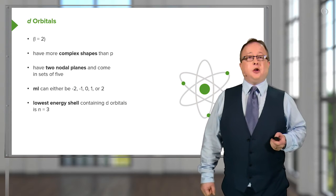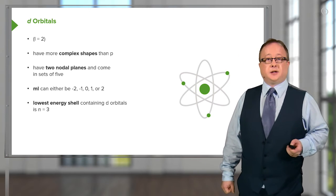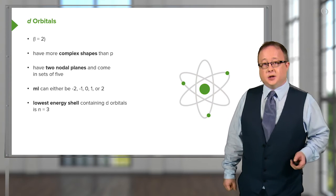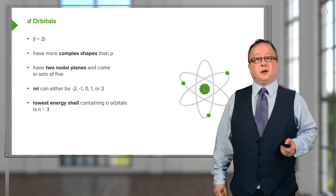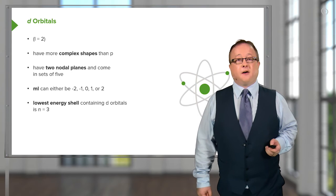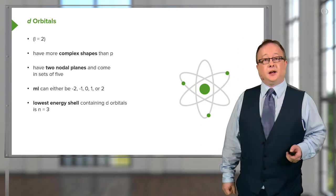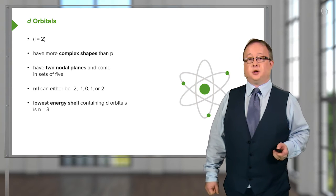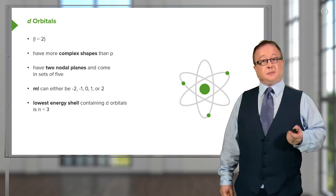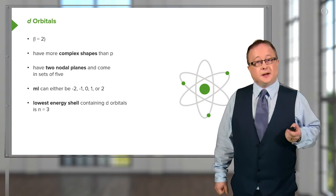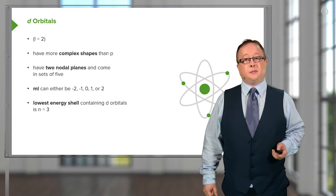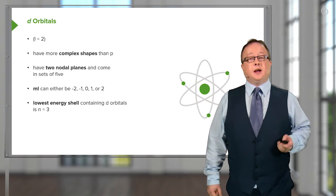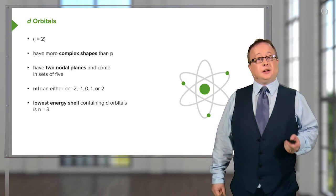So, d orbitals. These have a more complex set of shapes, and they have the orbital quantum number of two. The d in d orbital stands for diffuse. And they have two nodal planes and come in sets of five. The ML, or magnetic orbital number, can be minus two, minus one, zero, one, or two. And don't just accept it as red. There is actually an equation which we'll come onto in the next lecture, which explains how you can determine this yourselves. The lowest energy shell containing d orbitals is n equals three. Prior to that, they haven't been unlocked.